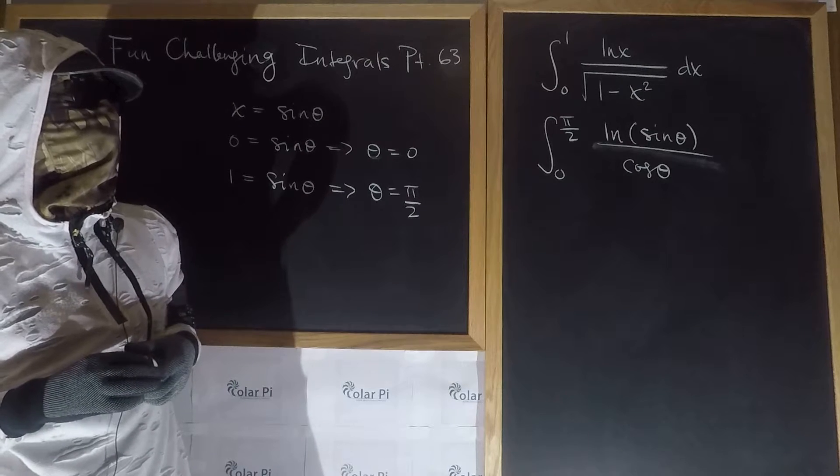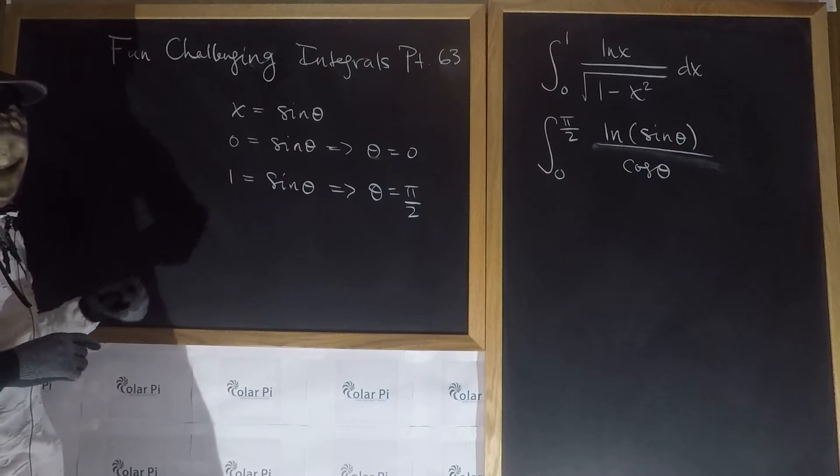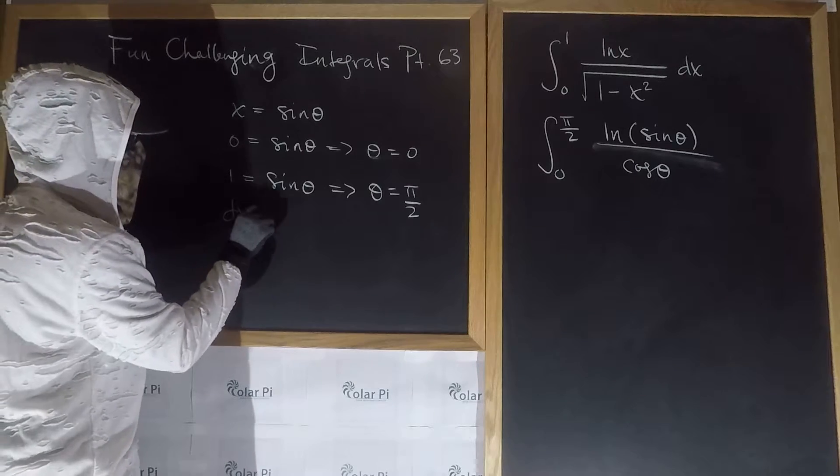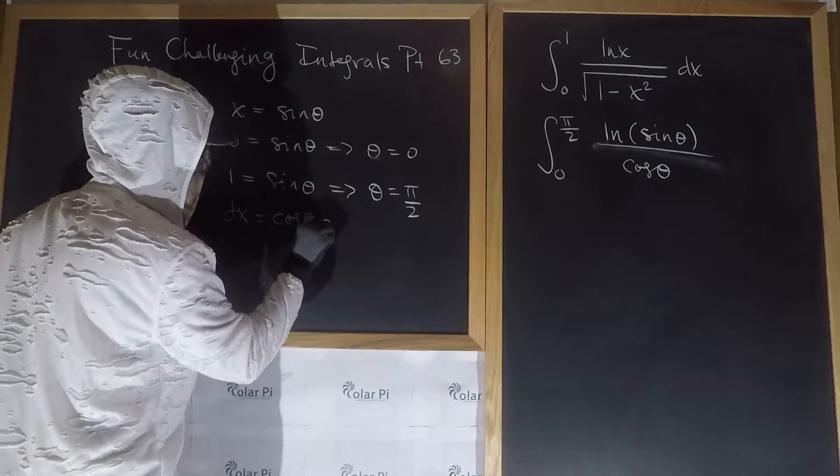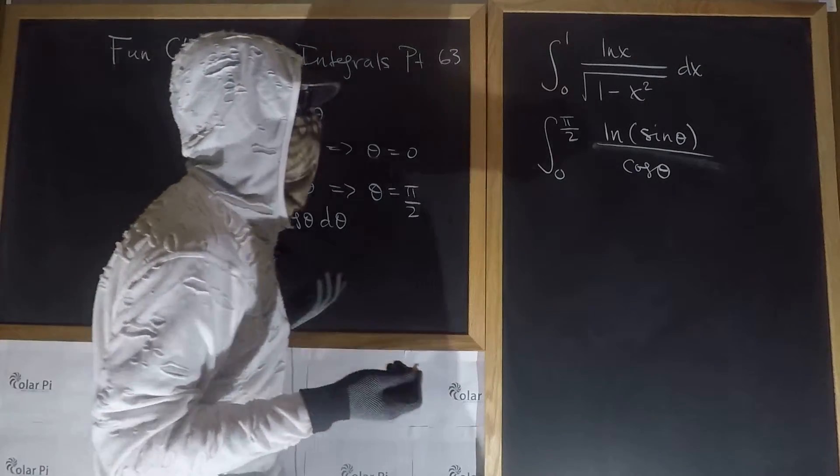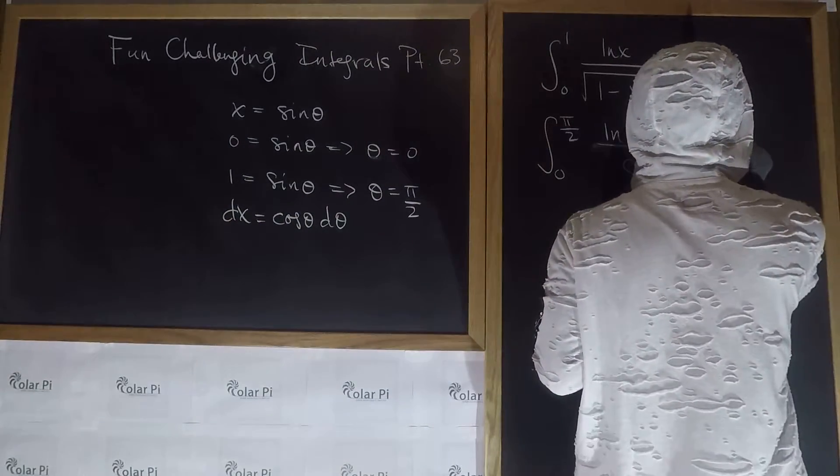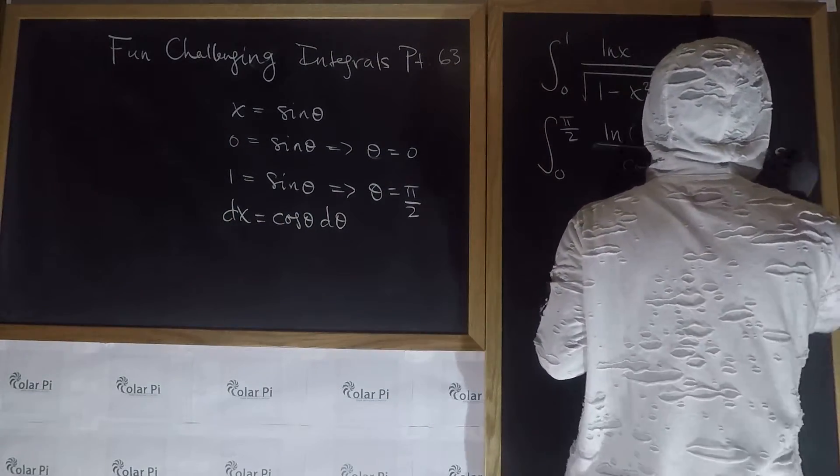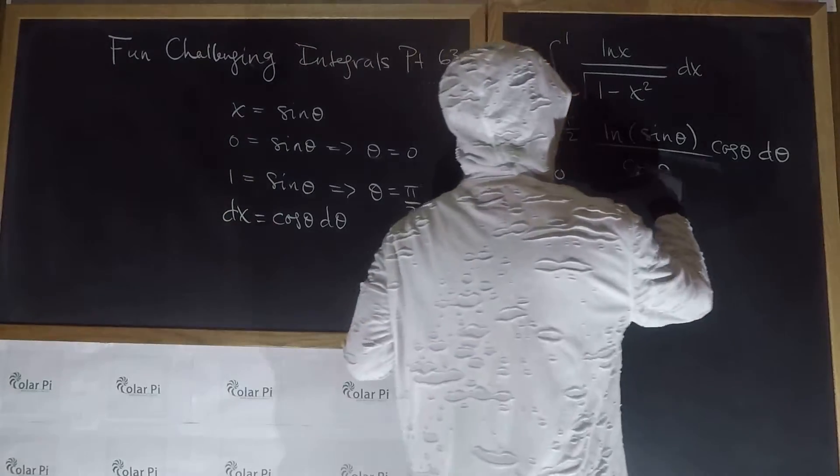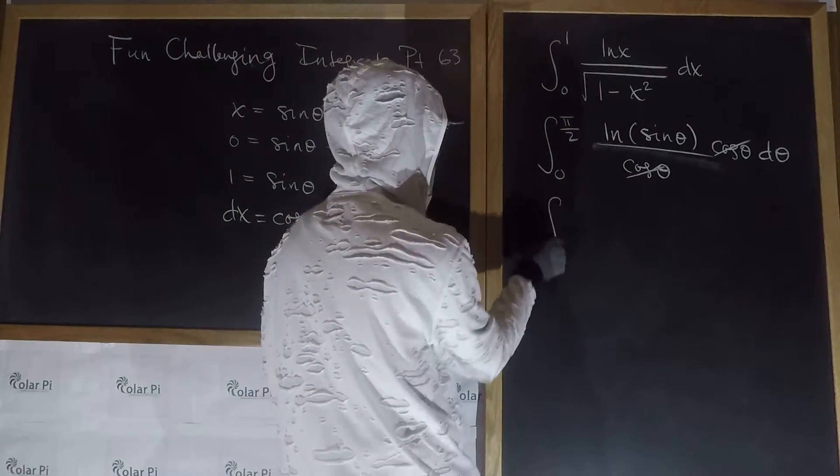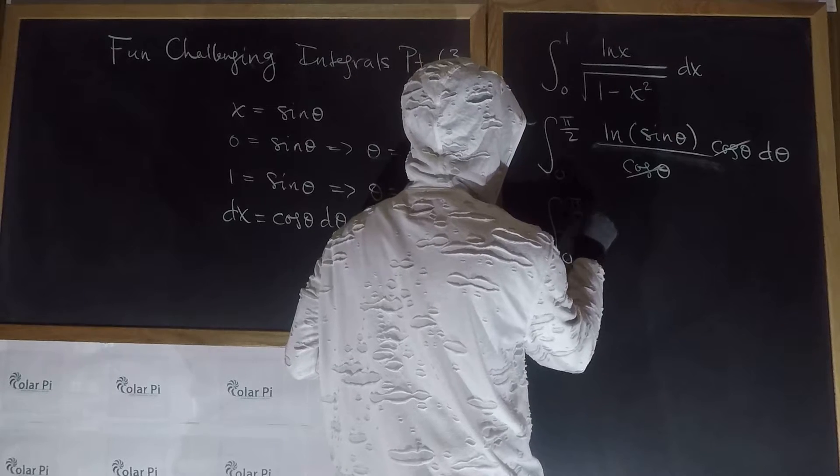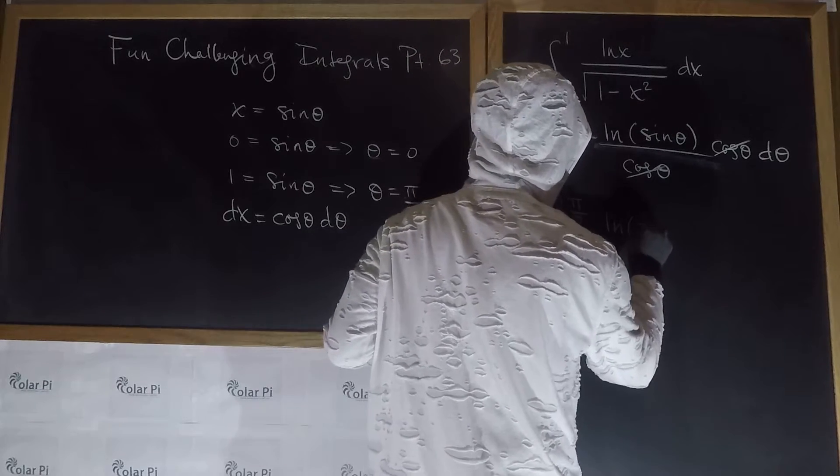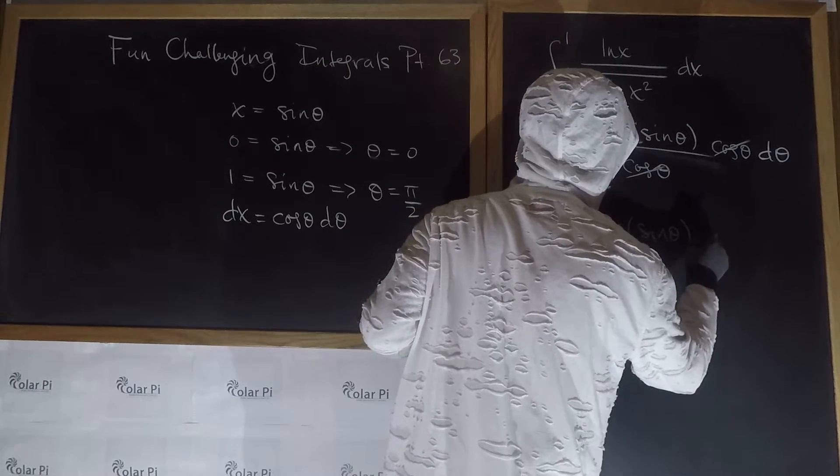And then, dx is going to be, since x is sine theta, dx is going to be cosine theta d theta. How convenient. So, what happens? We have zero to pi over two, the natural log of sine theta, d theta.